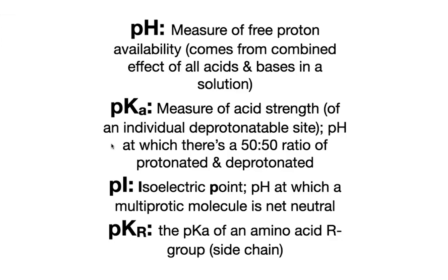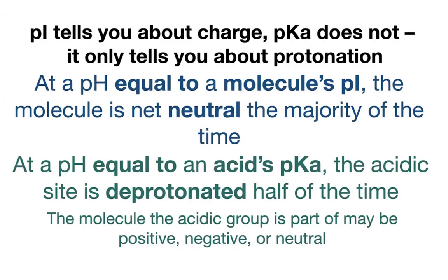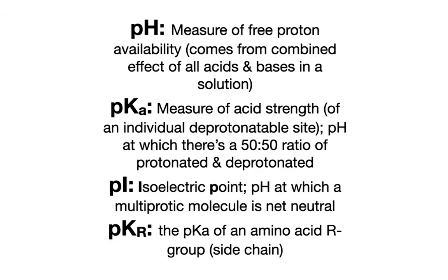If we have multiple sites, some will be protonated and some deprotonated, and you'll get to a point where there's a pH at which you're net neutral. Some groups might be positive, some groups might be negative, and your molecule overall is going to be neutral. This is your pI — the pH at which that happens.